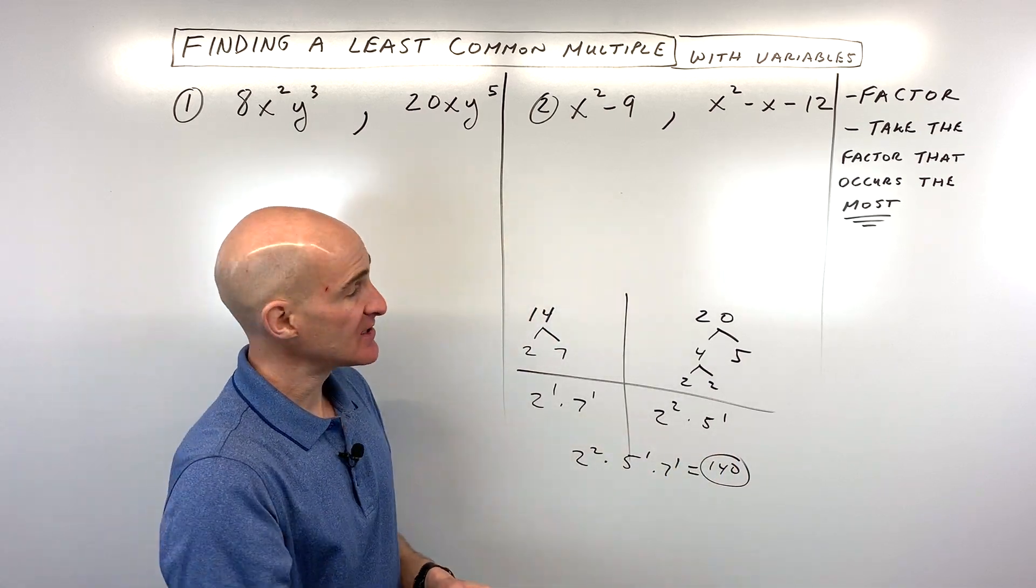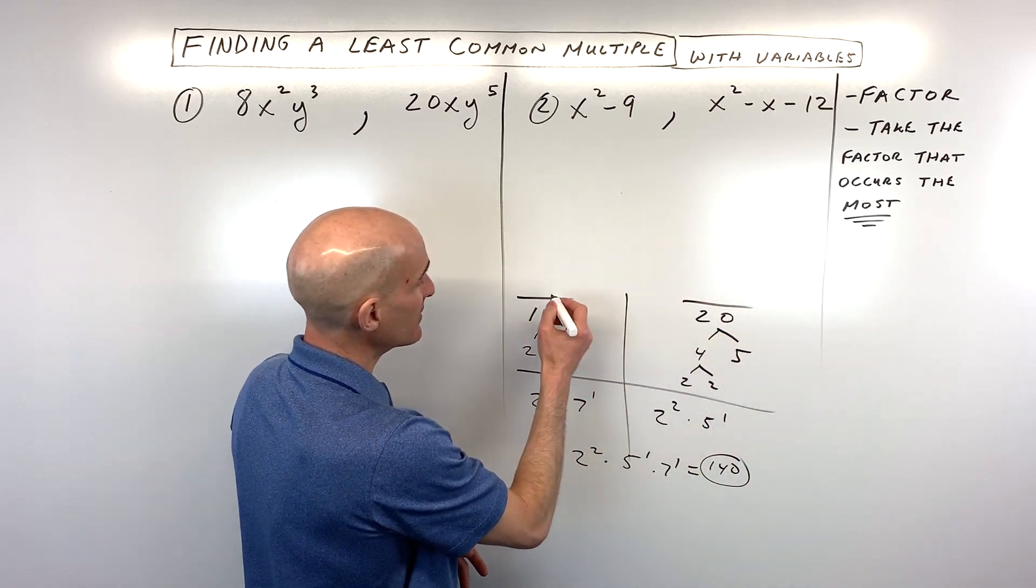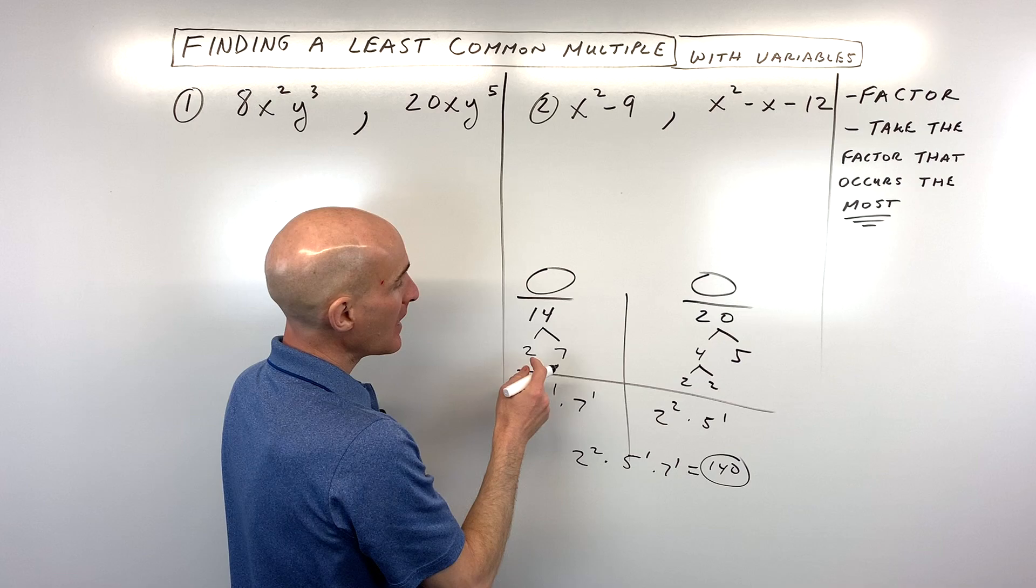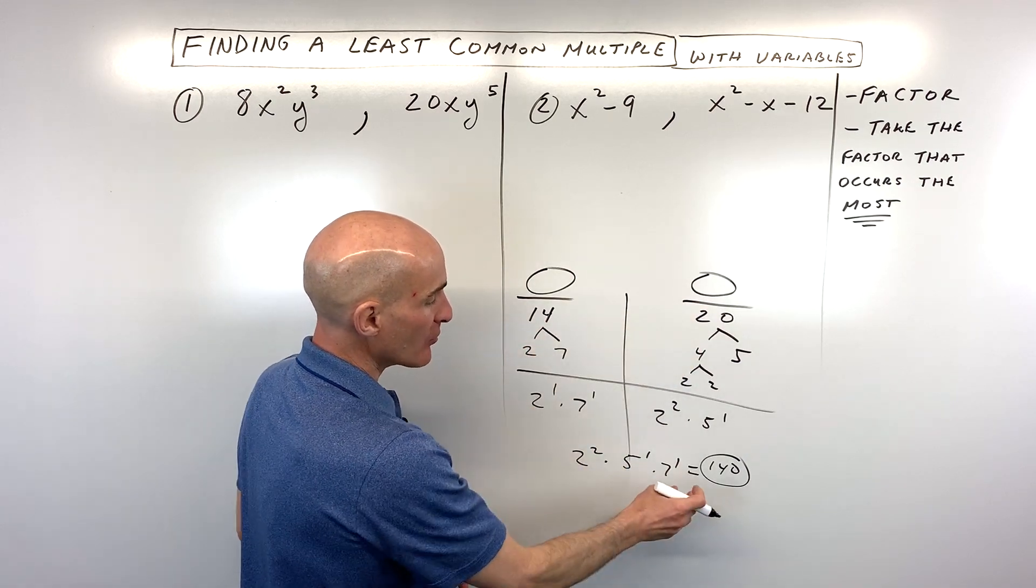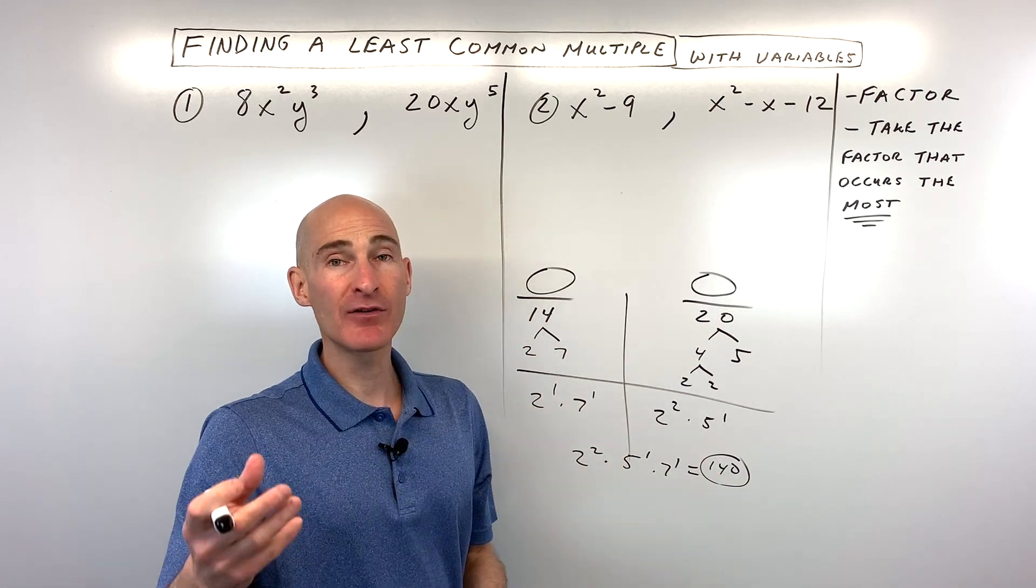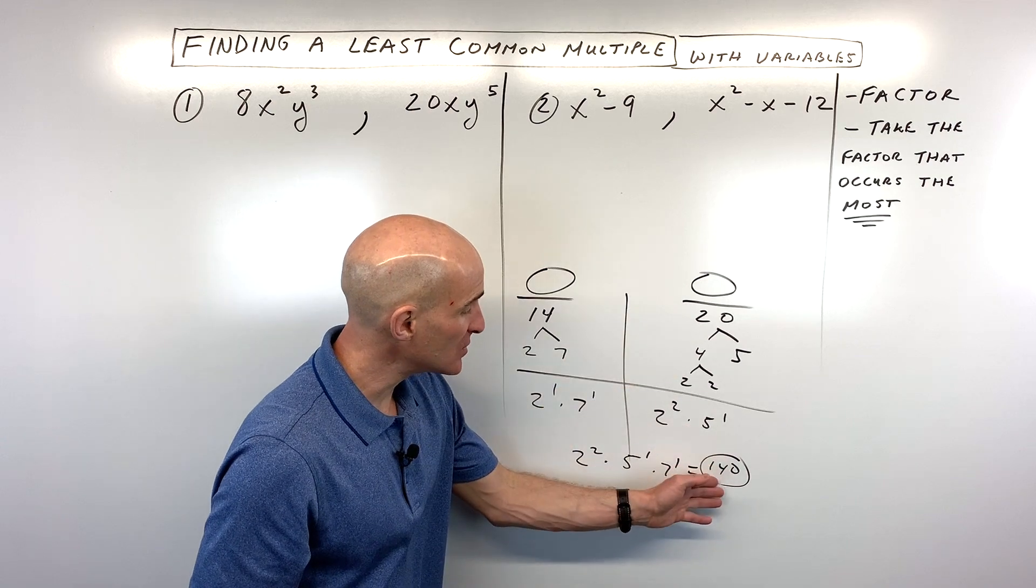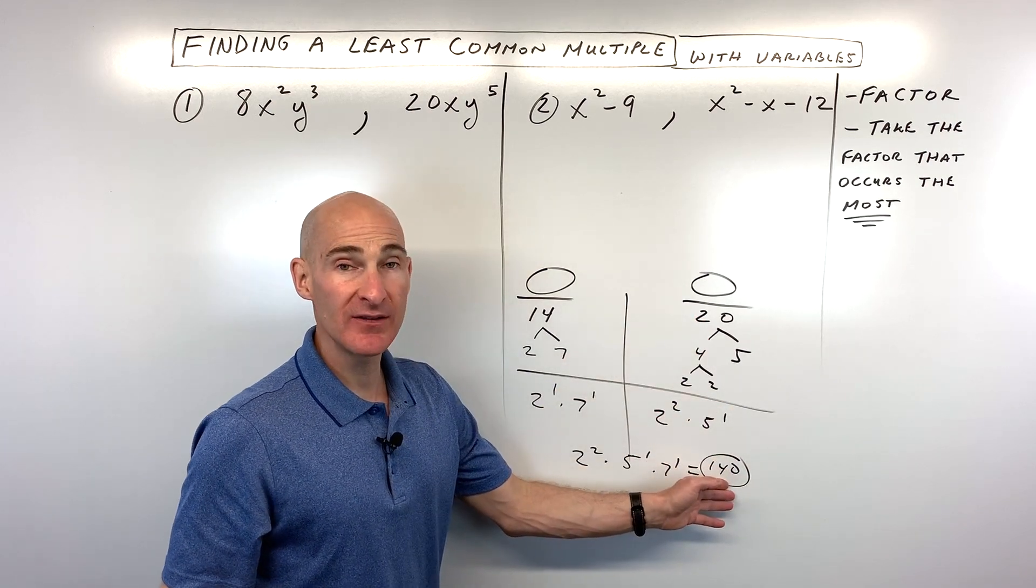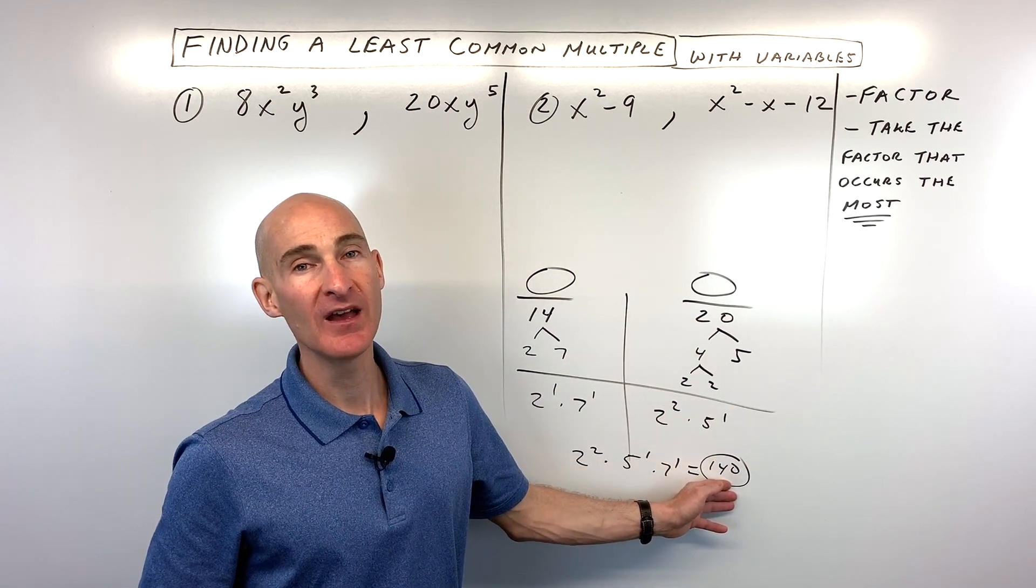So what that means now is imagine if we had two fractions like this, and we said, oh I want to get a common denominator. That common denominator, that smallest denominator that we could find where 14 would go into evenly and 20 would go into evenly, would be 140.